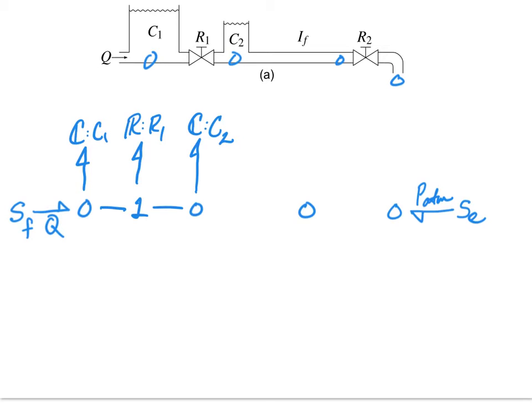Between the next set of pressures we have a pipe, and in this pipe we're accounting for the fluid inertia. Between the last set of pressures we have another valve.